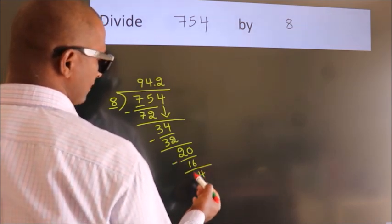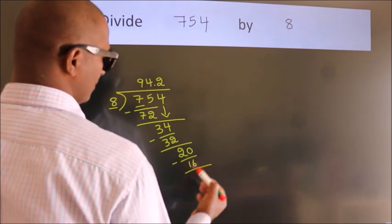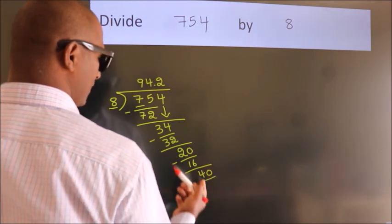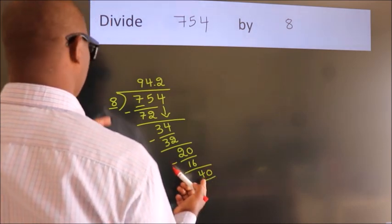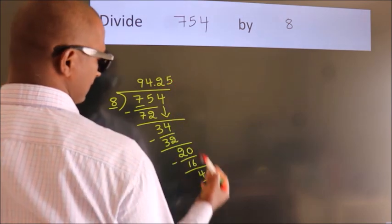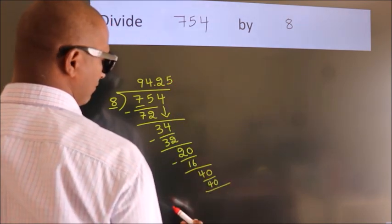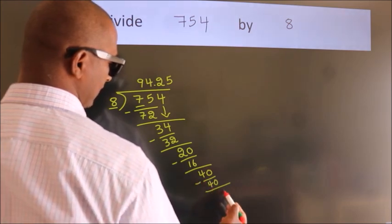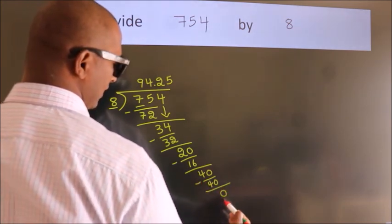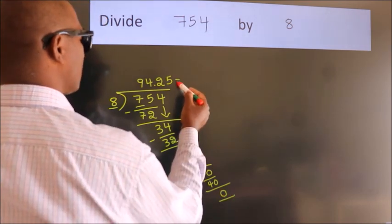After this, we already have the decimal. So, directly take 0. So, 40. When do we get 40? In 8 table. 8 fives 40. Now, we subtract. We get 0. Here, we got remainder 0. So, this is our quotient.